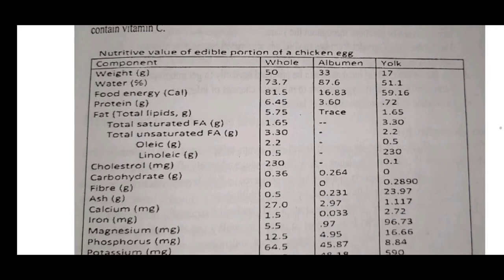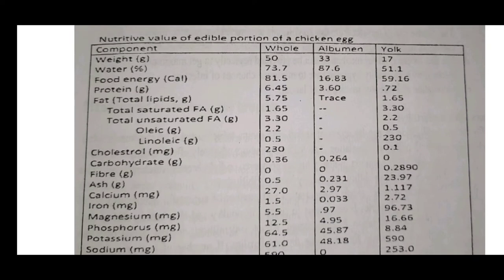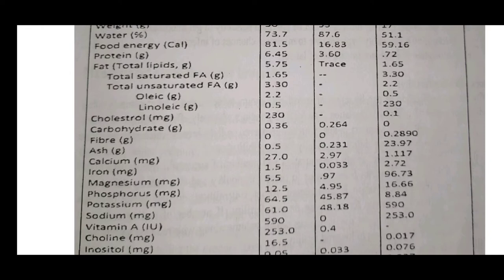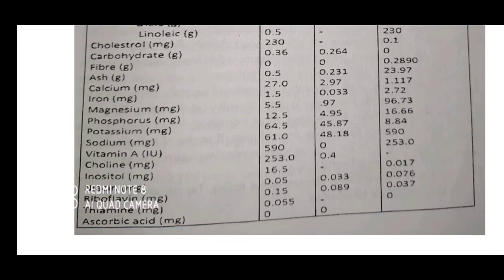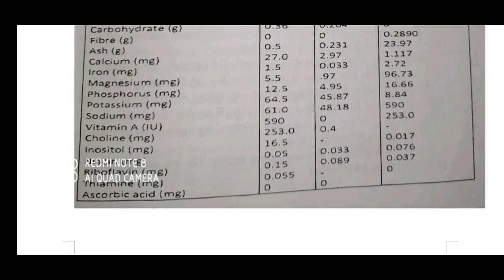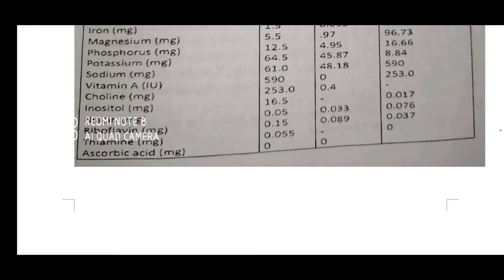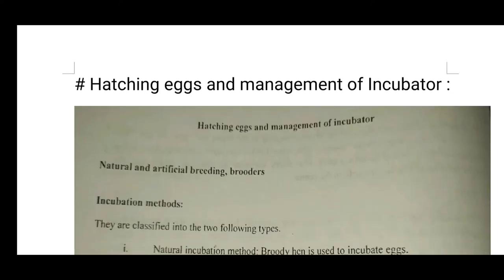However, eggs do not contain vitamin C. The nutritive value table for the edible portion of an egg covers components for whole egg, albumen, and yolk: weight, water percentage, food energy in calories, protein in grams, fat and total lipids, saturated and unsaturated fatty acids, cholesterol in milligrams, carbohydrates, ash, calcium, iron, magnesium, phosphorus, potassium, sodium, vitamins, choline, riboflavin, thiamine, and ascorbic acid.